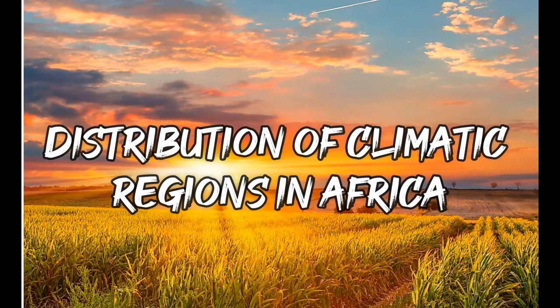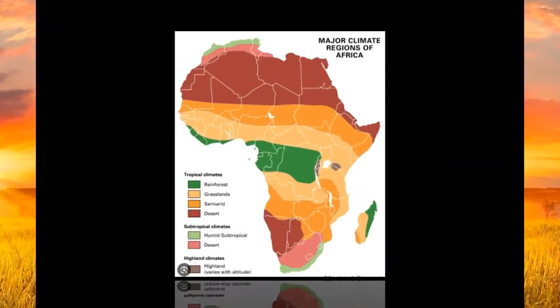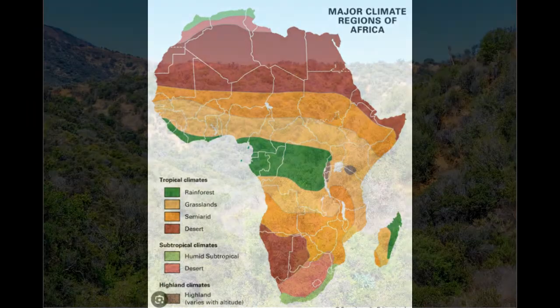Distribution of climatic regions in Africa. Africa is divided into eight major climatic regions. These are: